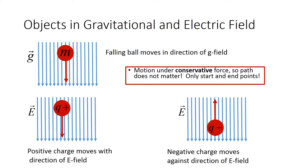I'm going to start out by using the analogy of a gravitational field and electric field. If we were to drop a ball of mass m off of a roof, that ball would move in the direction of the gravitational field, meaning toward the center of the earth. Gravity is a conservative force, meaning if only gravity acts on this ball, the path it takes doesn't matter — only the start and end points — with no losses to friction or drag.